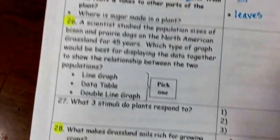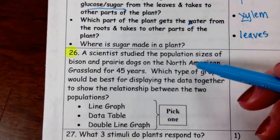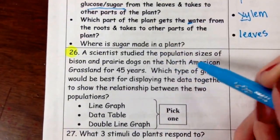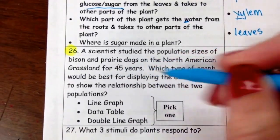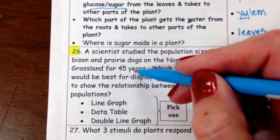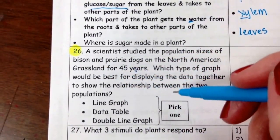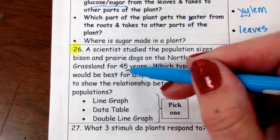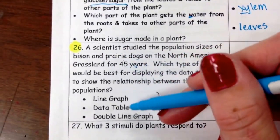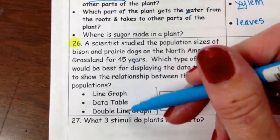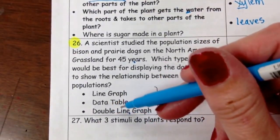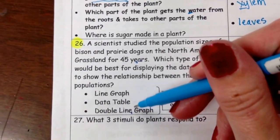Alright, if you're studying two things, like right here. A scientist studied the population sizes of bison and prairie dogs. Two things, bison and prairie dogs on the North American grassland for 45 years. Which type of graph would be best displaying? Well, you're comparing two things over time. See, over 45 years, you're going to use a double line graph. Because you're comparing two things, that's why we say double. We need two lines, one for the prairie dog, one for the bison. And then over time, we use a line graph.